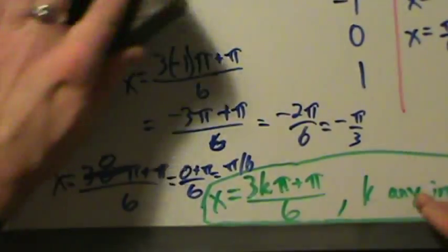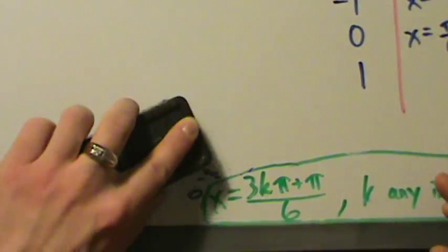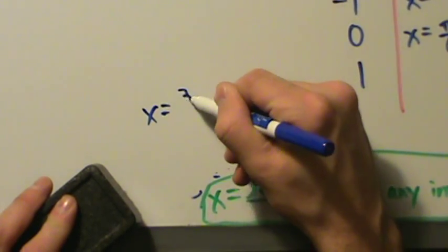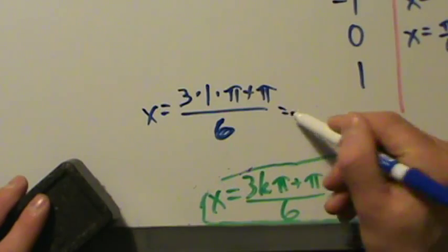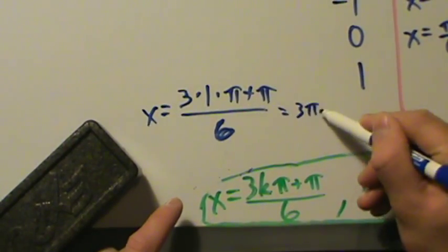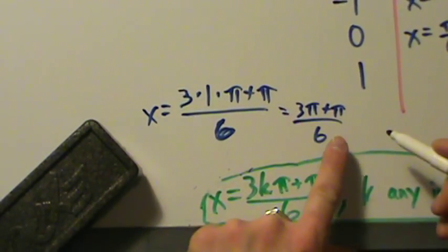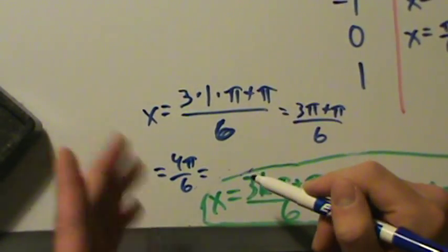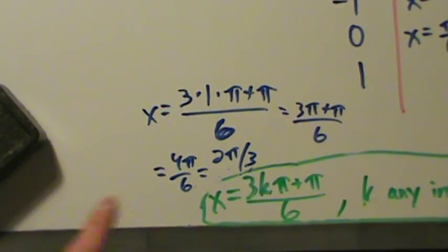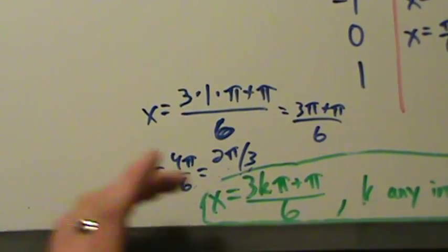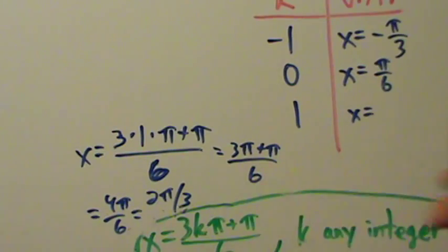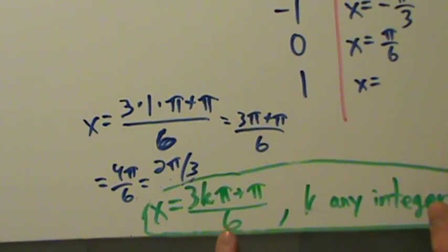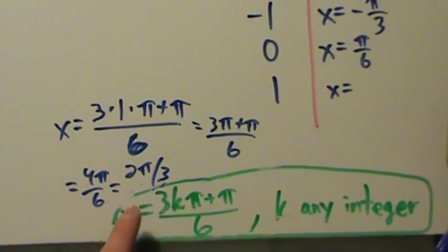When k is 1: x equals 3 times 1 times pi plus pi, all over 6. That's 3 pi plus pi over 6, which is 4 pi over 6. Pulling out a common factor of 2 and canceling gives 2 pi over 3. So when k is 1, x equals 2 pi over 3. Notice we saved ourselves work by getting the common denominator earlier, instead of having to do it separately for k equals negative 1 and k equals 1.